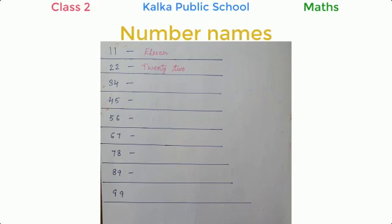Some numbers I am giving you as homework. You will do these on your own at home: 34, 45, 56, 67, 78, 89, and 99.